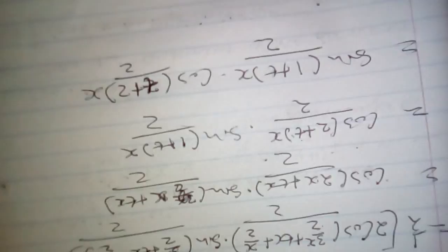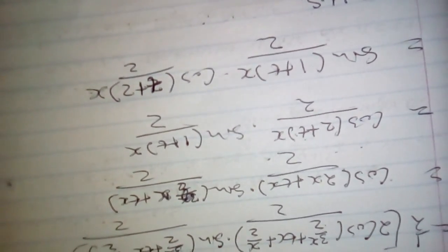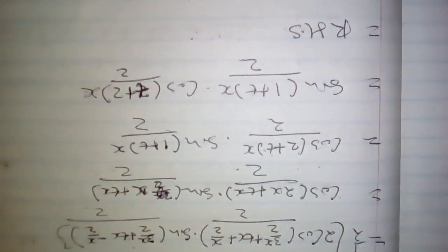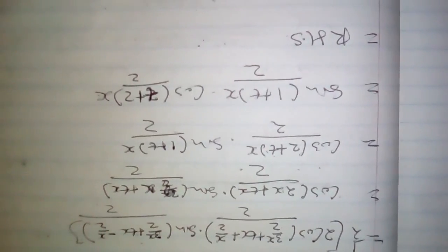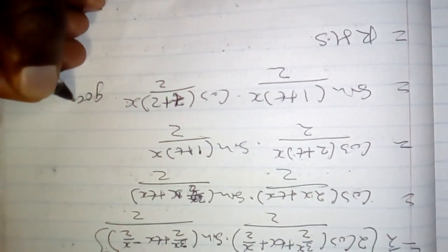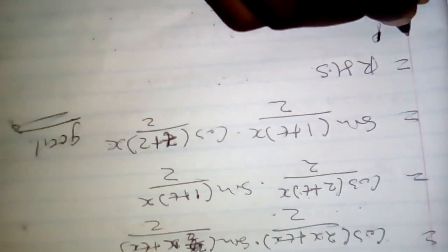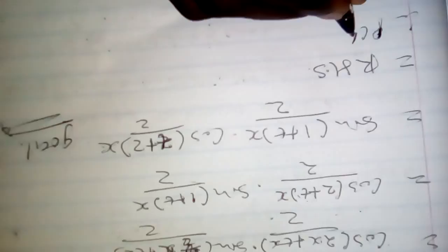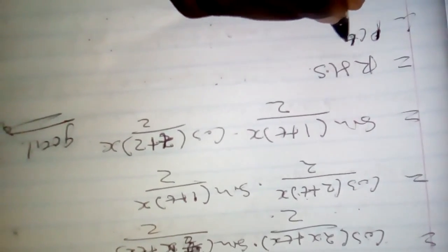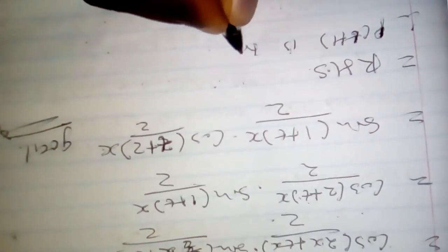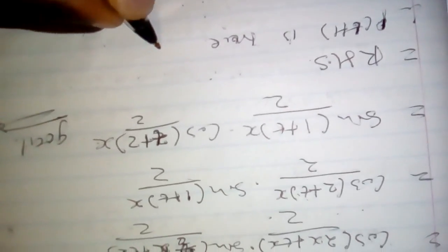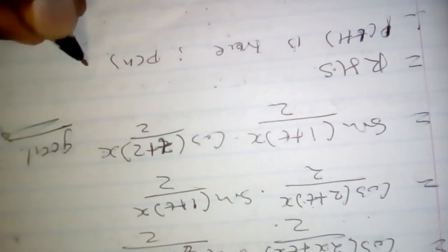Therefore, which is equal to the right hand side. Now we proved our goal, we arrived at our goal. Now we can conclude that therefore P(t + 1) is true, and therefore P(n) is true.